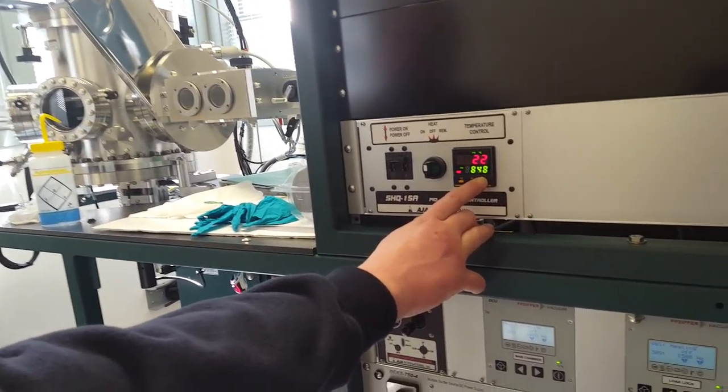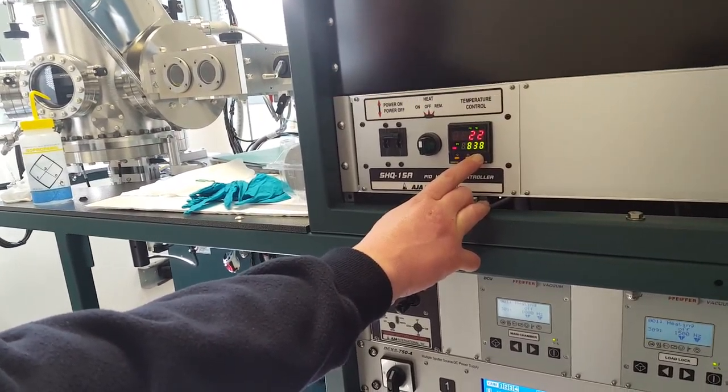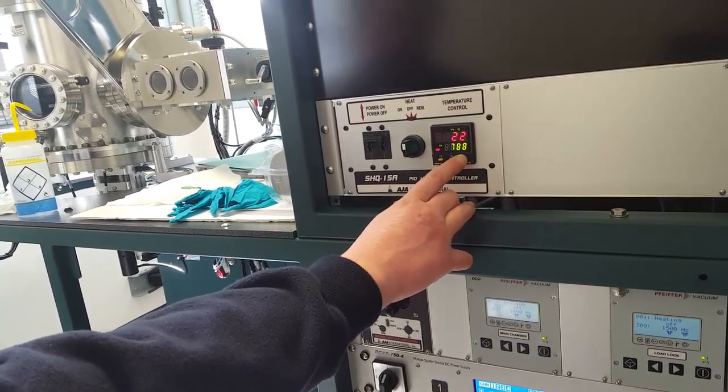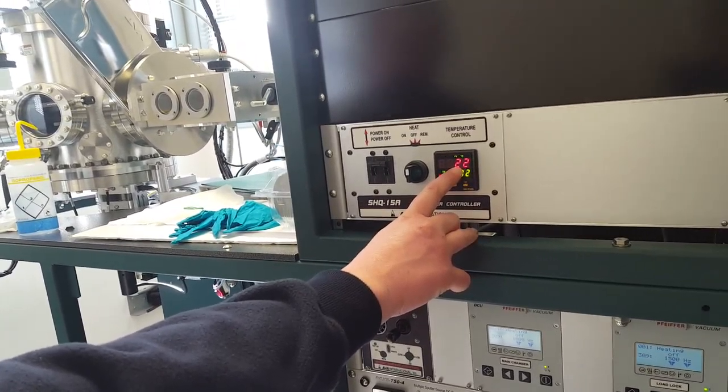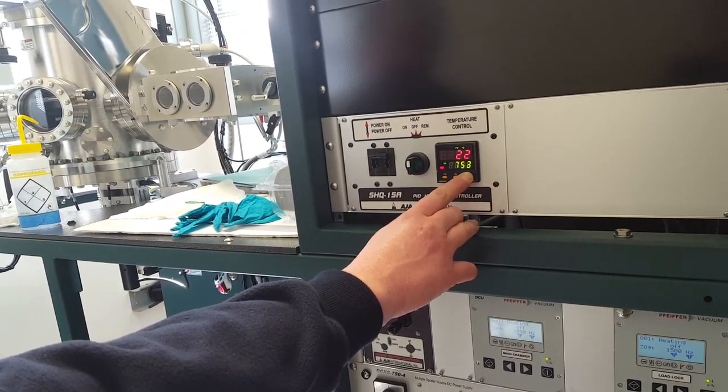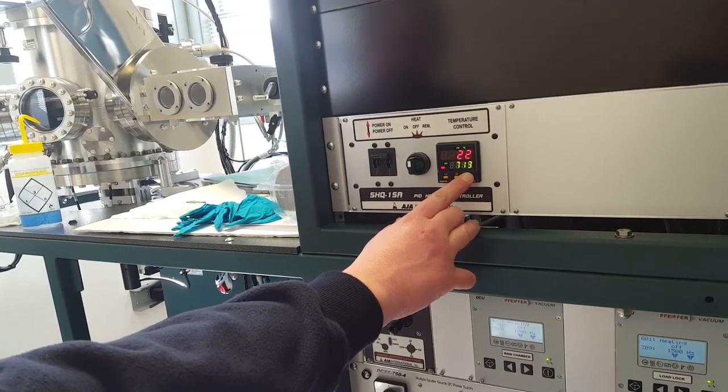So first I'll tune in the lower temperature range. We're going to change our set value, the temperature set value. This is what the thermocouple is reading. It's usually going to be very close to what your cooling water temperature is when it's at ambience.